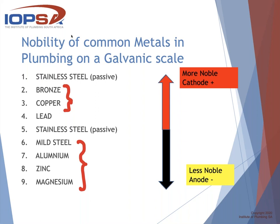Looking at numbers two and three on the scale — bronze and copper up at the top — then mild steel at six, aluminium, zinc, and magnesium down at the bottom. On the right-hand side, the red arrow says 'more noble — cathode'. So bronze and copper act with positive electrons, while going down to mild steel, aluminium, and magnesium, they're less noble and act as an anode. The further apart the metals are on the scale, the better they act as anodes.